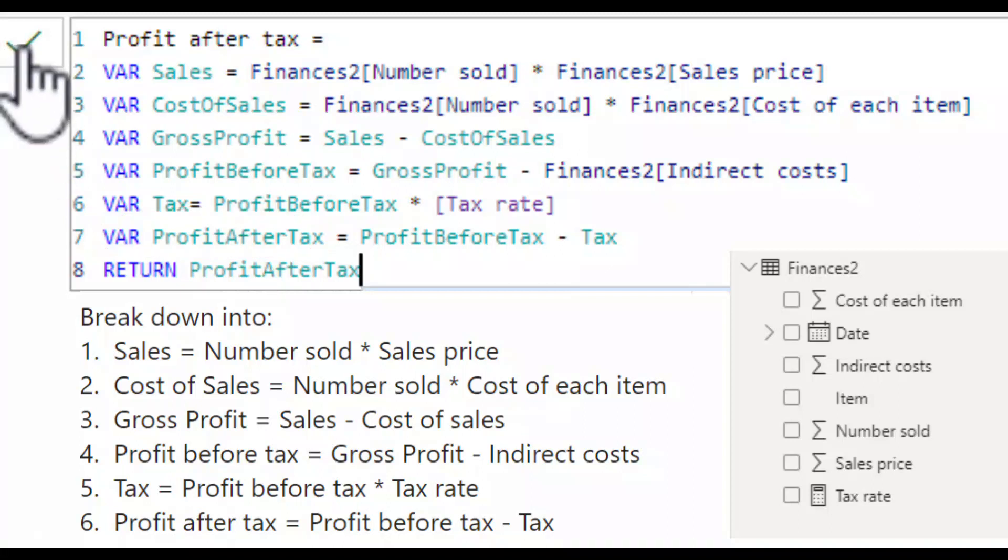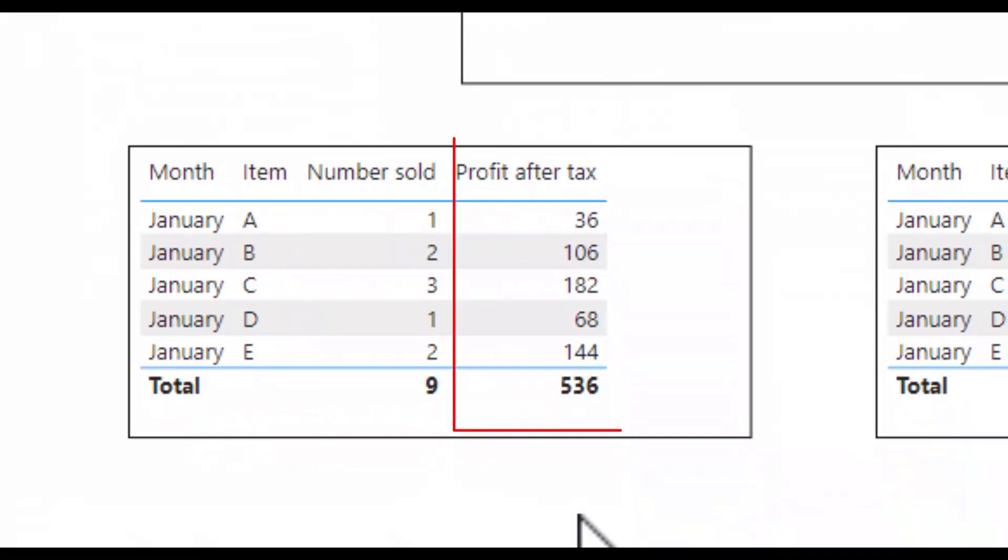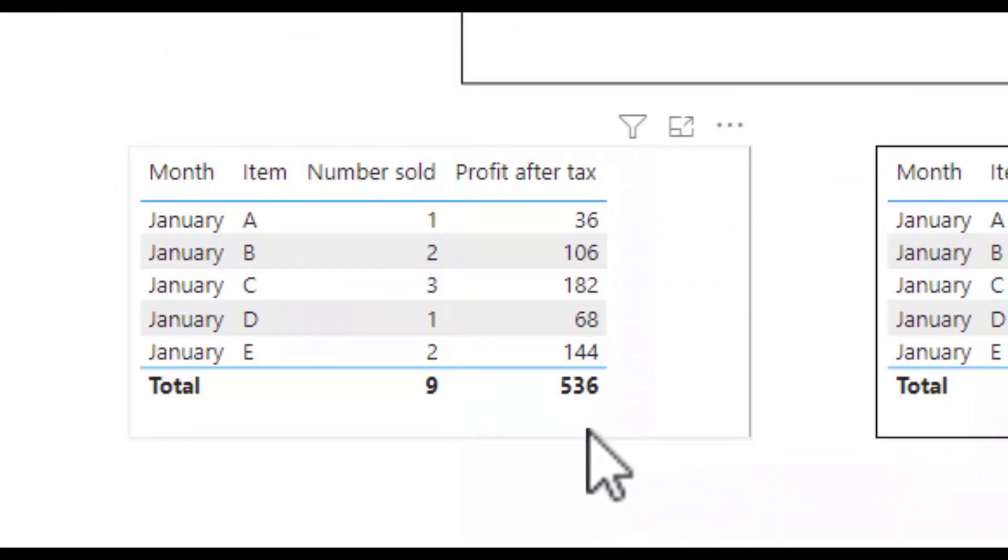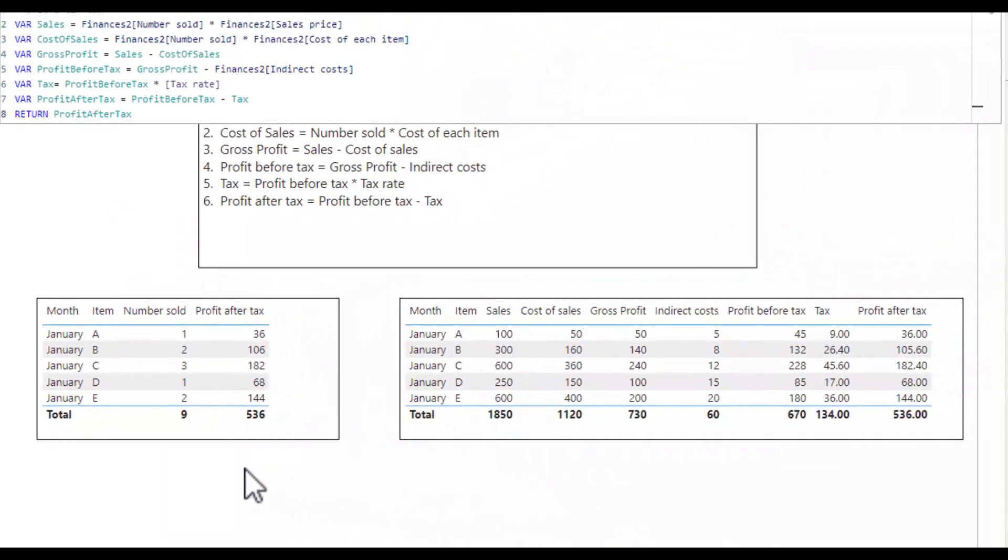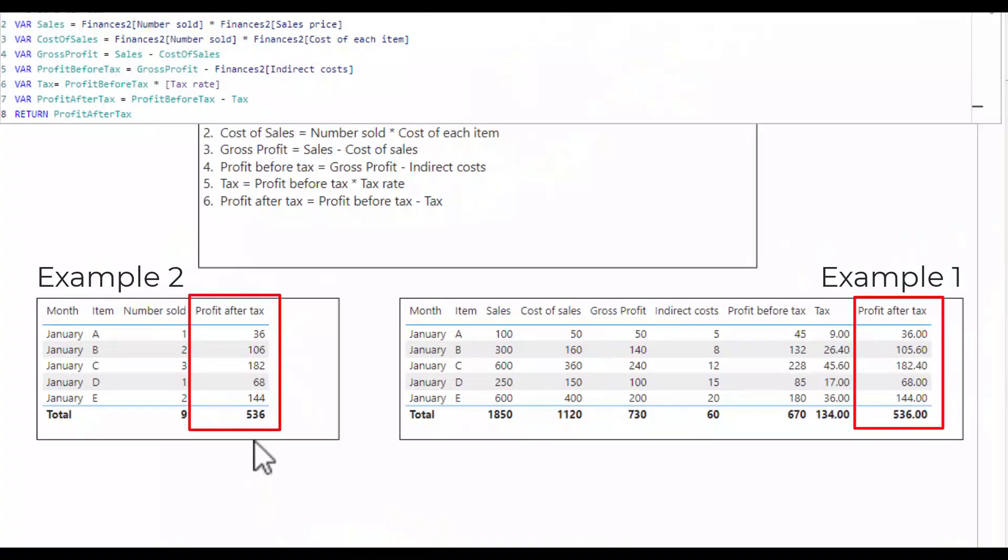If I now click the tick mark to submit my code, let's see if this has worked. Into this table, I have added the new calculated profit after tax figure. All looks good. And I can compare this profit after tax figure in example two to the profit after tax in example one. And as you can see, they both agree.